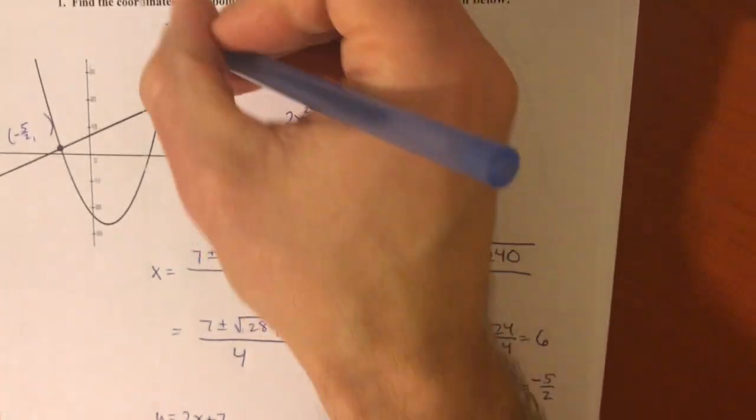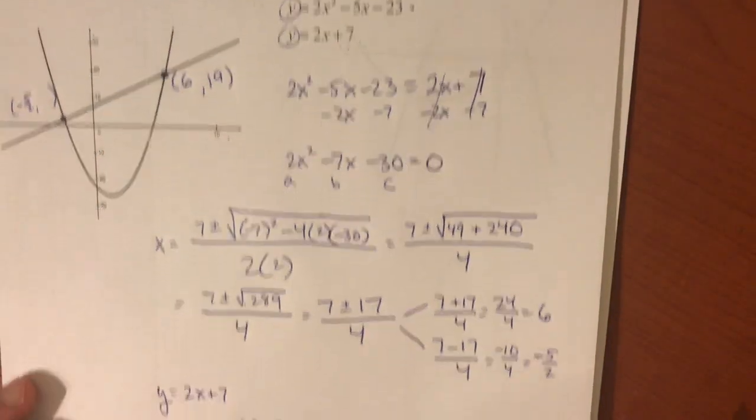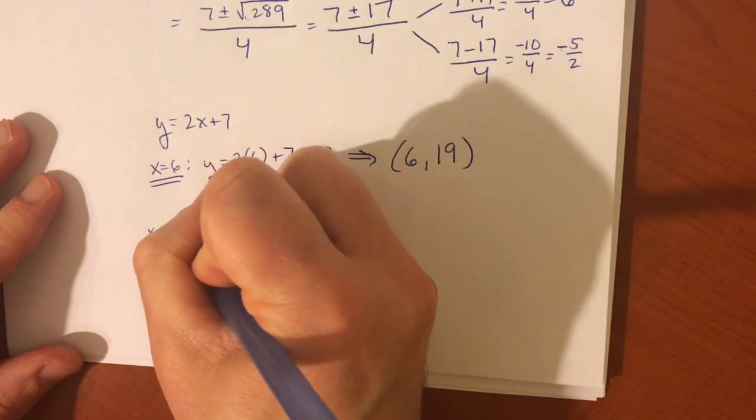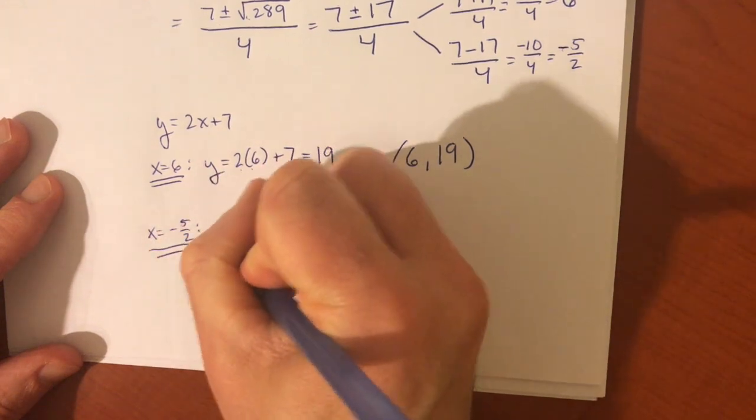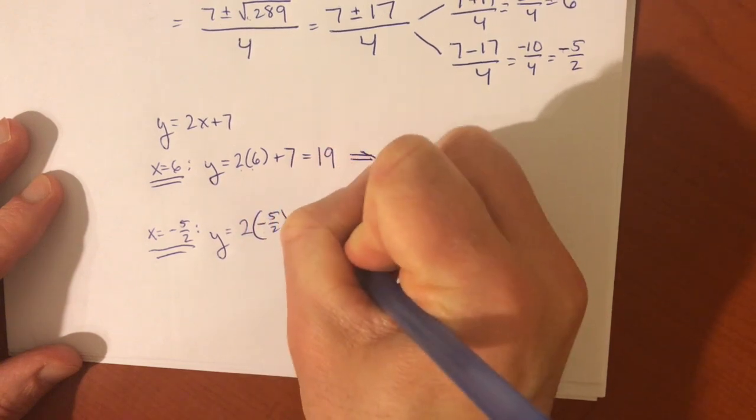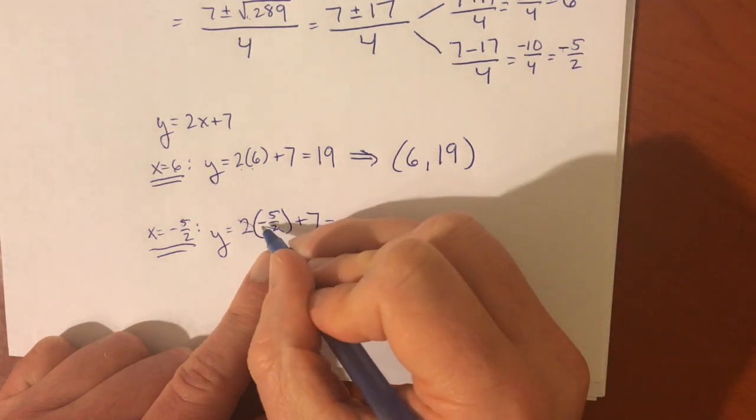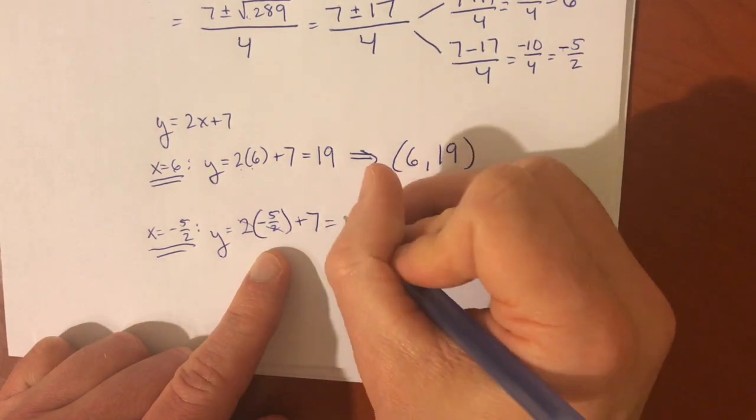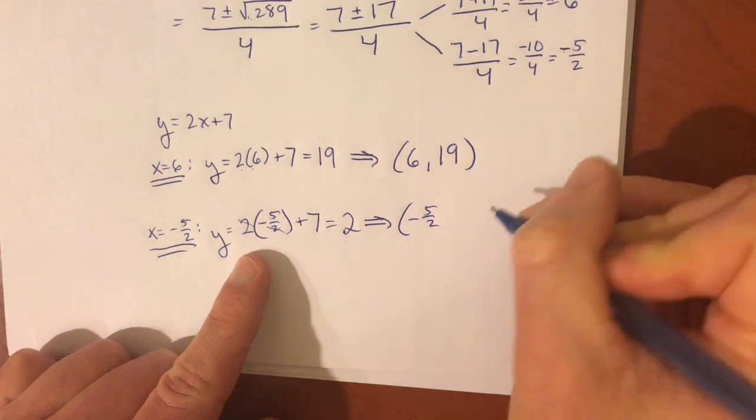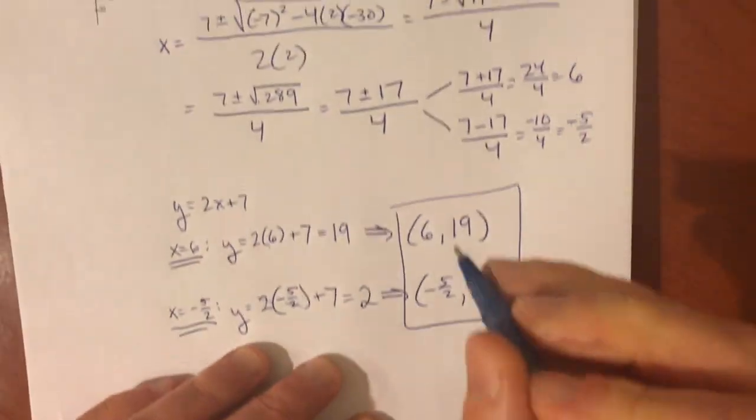And, that seems to make sense here. It looks like it's a little bit less than 20, or right around 20. The other is when x is negative 5 halves, or negative 2.5. I'm going to do this no calculator. And, when you plug that in, negative 5 halves times 2, 2's cancel, leaving you with negative 5. Negative 5 plus 7 is positive 2. So, our other ordered pair is negative 5 halves, comma, 2.